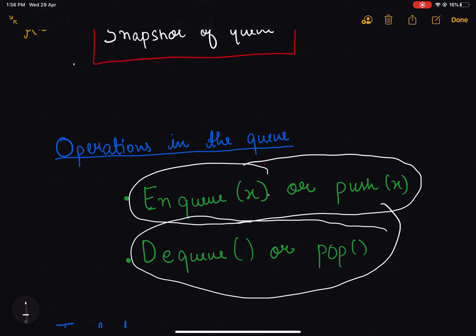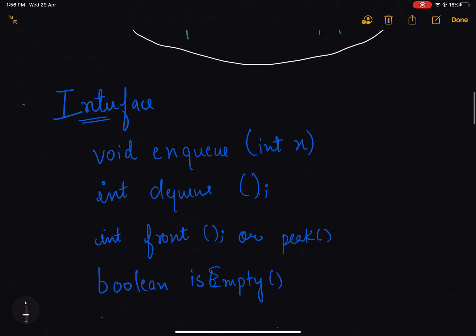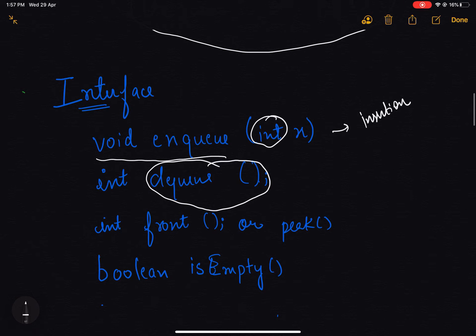Now if I want to create an interface for the queue, it will be something like this: the first function is enqueue which supports insertion, and the second operation is dequeue. Here I am assuming that the queue is maintaining integer elements, but it can be of any type. The dequeue operation means delete an element from the queue.